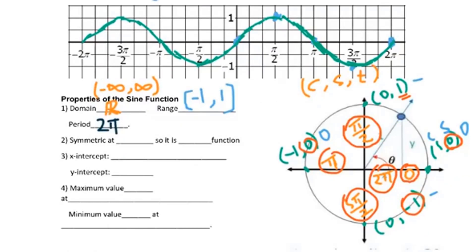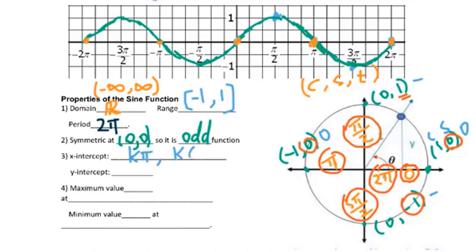For this sine function, it is symmetric at the origin — that's (0, 0). Whenever the graph of any function is symmetric at the origin, we call that an odd function. For the x-intercepts, they will be 0, pi, 2 pi, negative pi, negative 2 pi, negative 3 pi, 3 pi, 4 pi, 5 pi — keep going. So we can write that as k pi, where k is an integer.